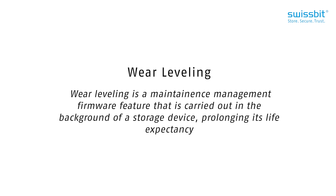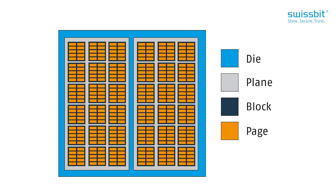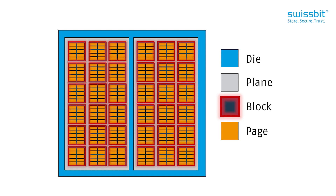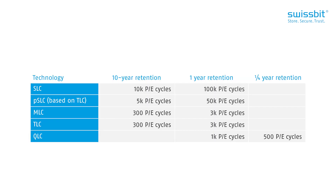Another important flash controller feature is wear leveling. Wear leveling is a maintenance management firmware feature that is carried out in the background of a storage device, prolonging its life expectancy. Blocks are the smallest entity that can be erased on a flash memory, and all flashes have limits as to how many program/erase cycles they can handle.